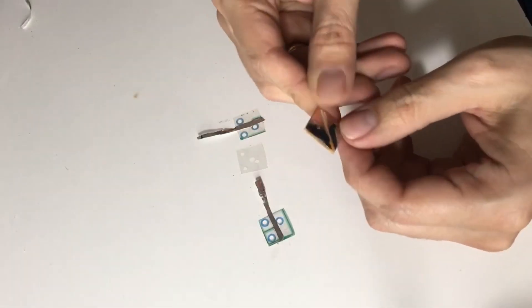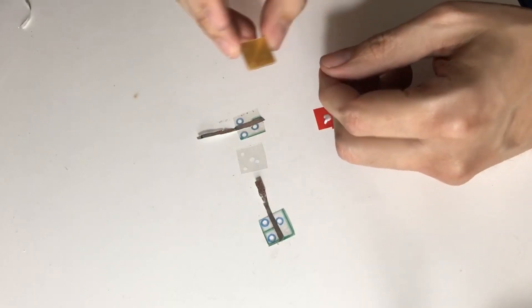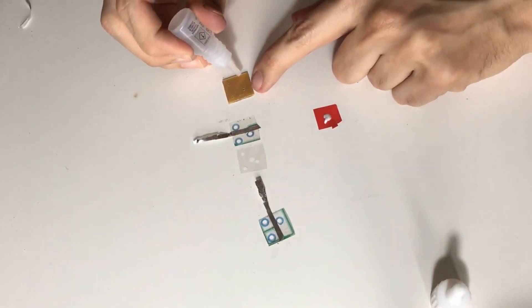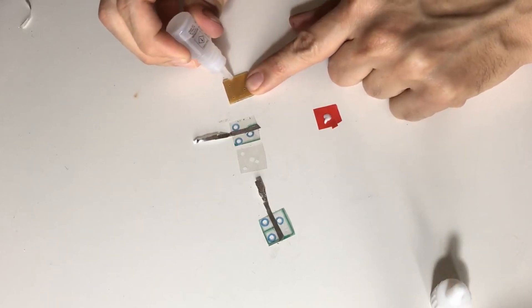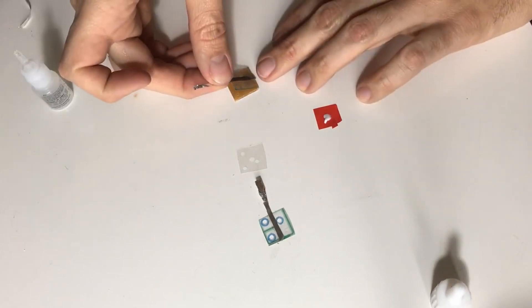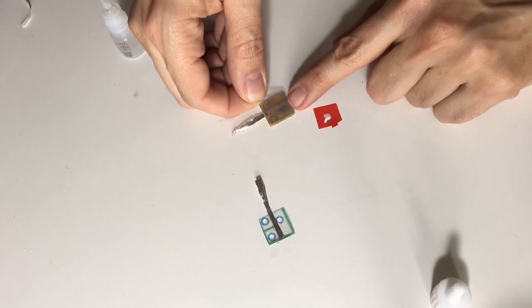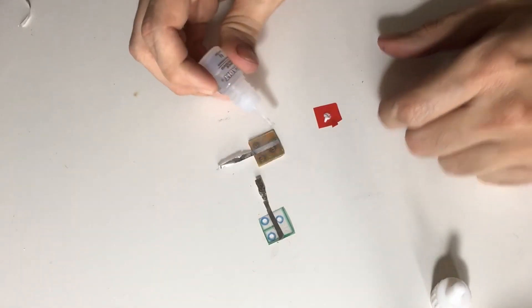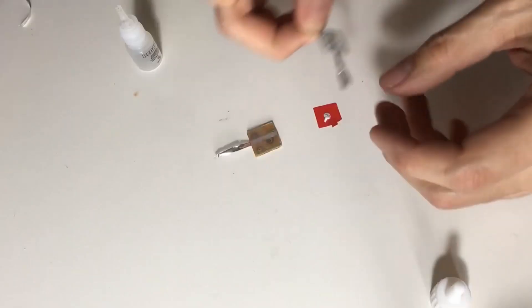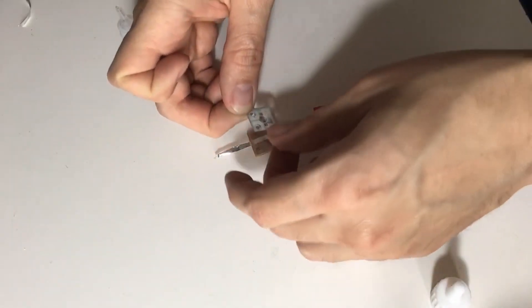Now I'm going to glue down the membrane on each copper square. For this, I will use instant adhesive. I glue down the bottom layer. Then I apply more adhesive and glue down the middle layer. Then I put more instant adhesive and glue down the top layer.